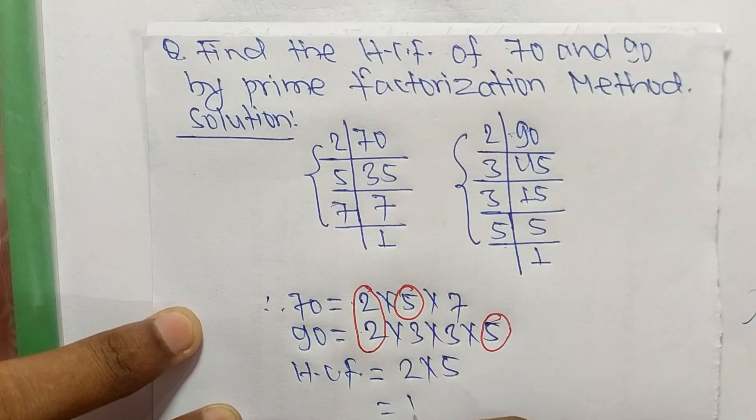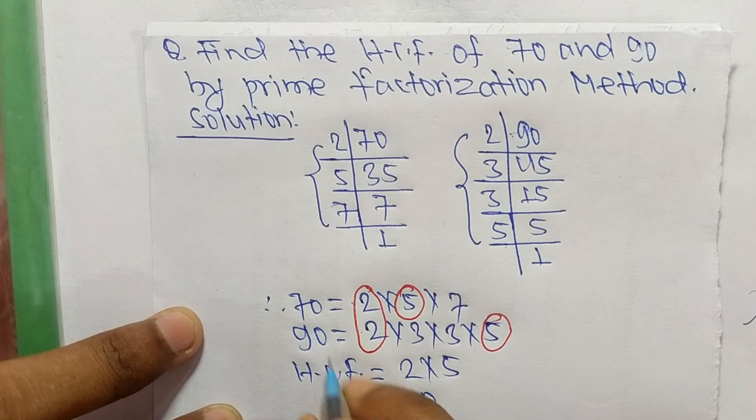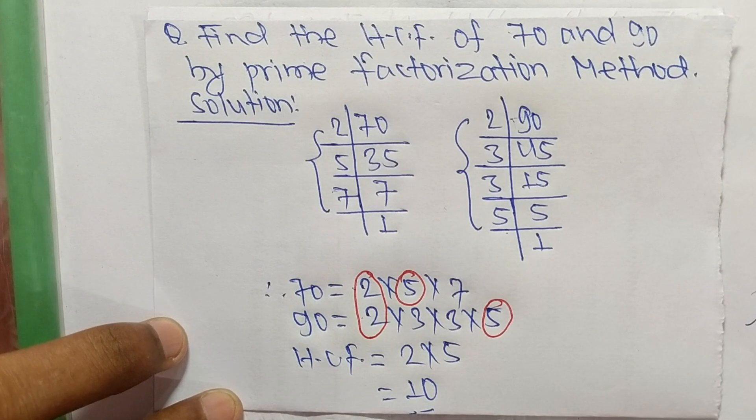So 10 is the HCF of 70 and 90. So this much for today, and thanks for watching.